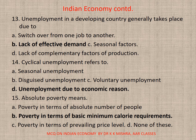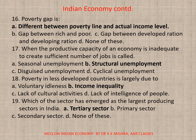Question 15: Absolute Poverty means — correct option is B. Poverty in terms of basic minimum calorie requirement. Question 16: Poverty gap guarantees — correct option is A. Difference between Poverty Line and Actual Income Level. Question 17: When the productive capacity of an economy is insufficient to create a sufficient number of jobs, it is called — correct option is B. Structural Unemployment.